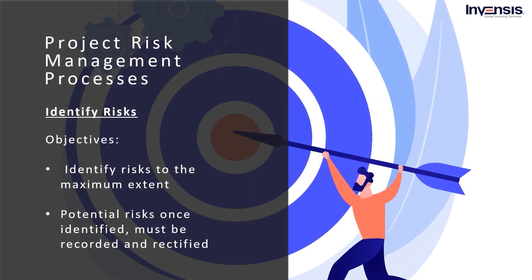Now let's move on to the second risk management process: identify risks. The main reason for risk identification is to identify risks to the maximum extent possible. Some risks are unknowable, requiring the identify risk process to be iterative — you can repeat the identify risks process to find new risks that can occur over time. This process should be recorded and considered for appropriate action. Where responses are not implemented immediately, these should be considered during the plan risk responses process.